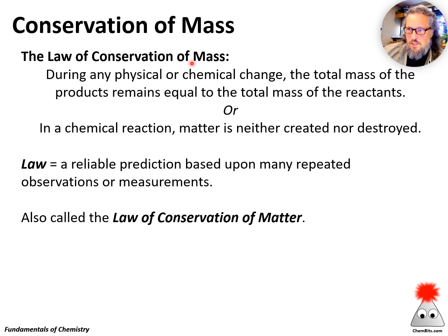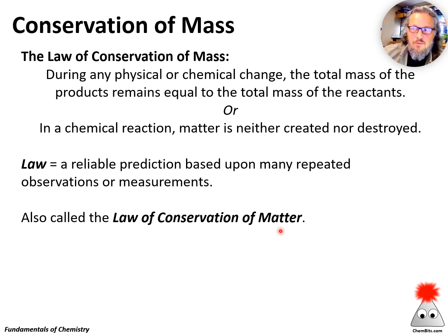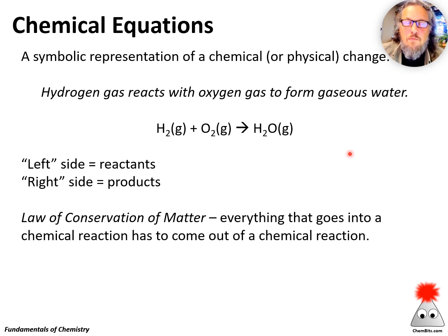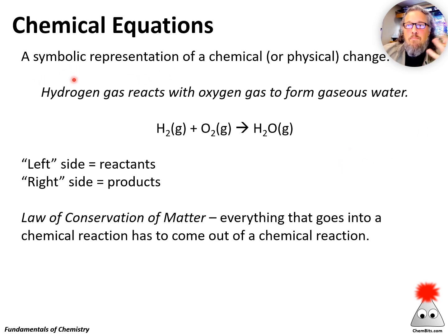We usually formally call this the law of conservation of mass, but it's often also referred to as the law of conservation of matter, because matter is something that occupies space and has mass. So how do we get the law of conservation of matter into what we call a chemical equation? A chemical equation is a symbolic representation of a chemical — or sometimes a physical — change.